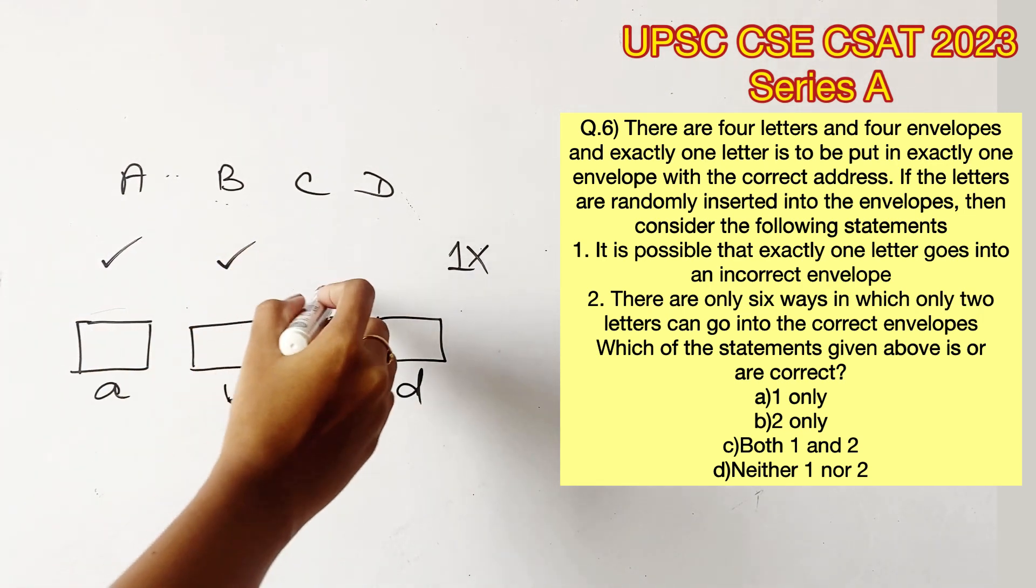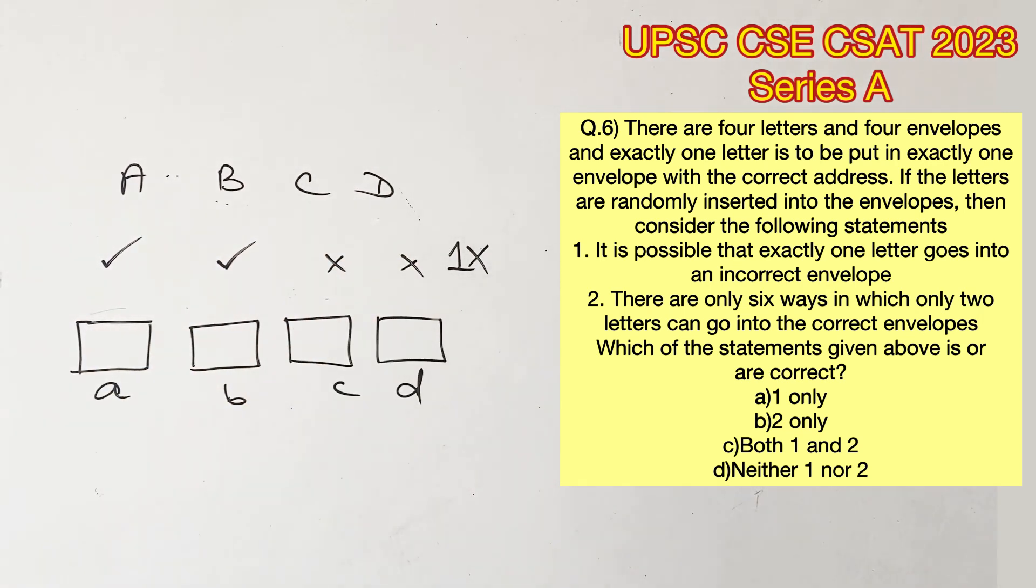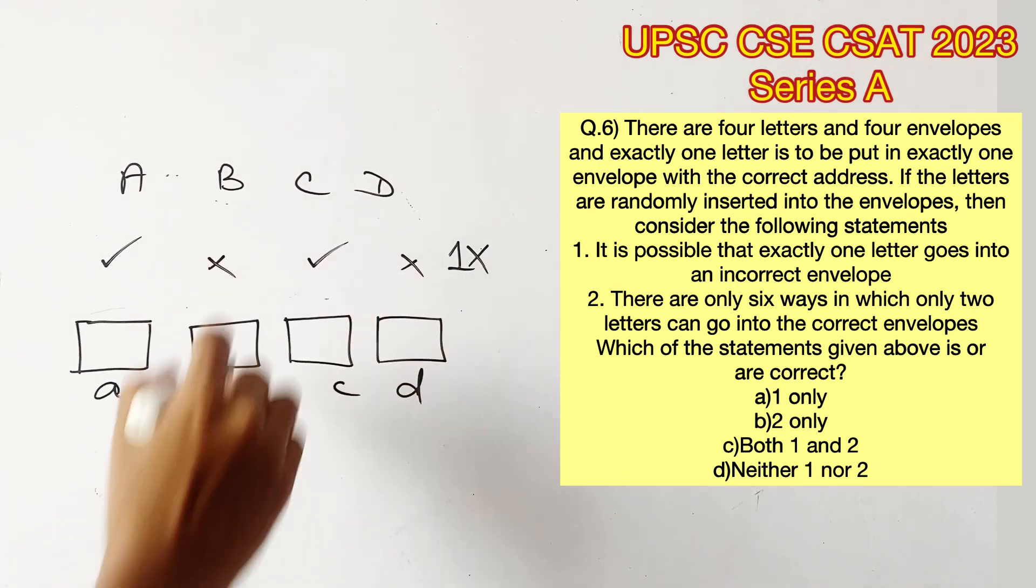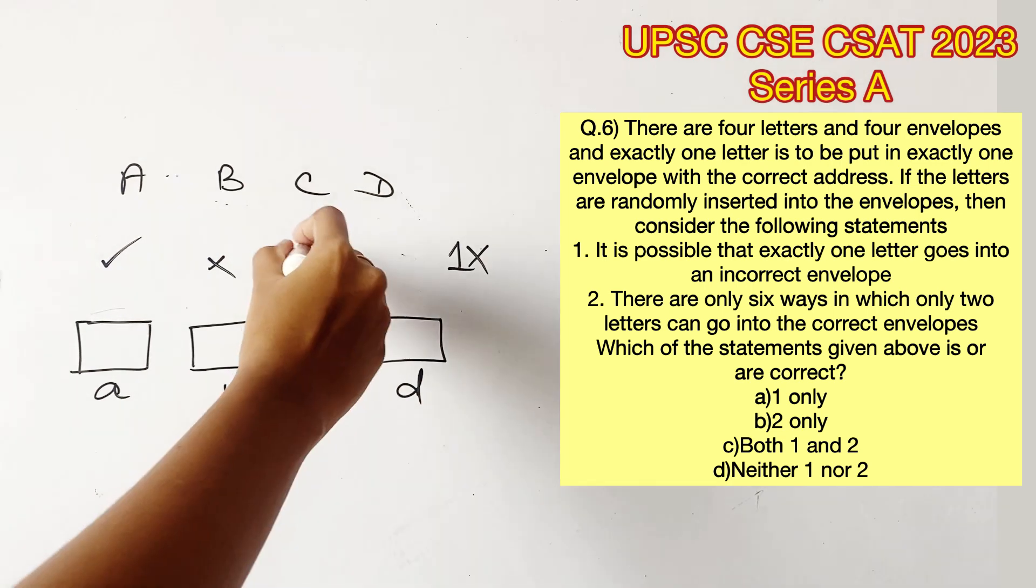Let's say the first possibility where A and B are correct, so C and D go into wrong envelopes. Next possibility where A and C are correct, the other two are wrong. Next possibility will be A and D, the other two are wrong.